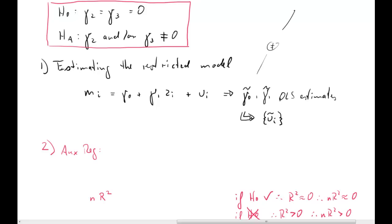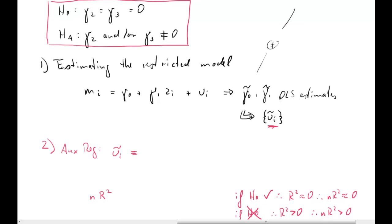From the lecture notes you already know that the auxiliary regression will have as its dependent variable the estimated residuals — the estimated residuals from the restricted model. Now comes the key step: what type of explanatory variables would we have to put on the right-hand side of this auxiliary regression to achieve exactly what we argued — that R squared is near zero under H0 and larger under the alternative?